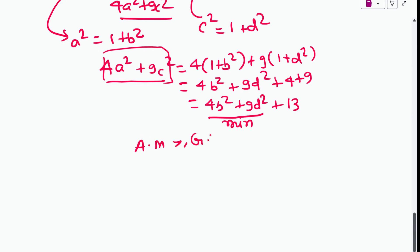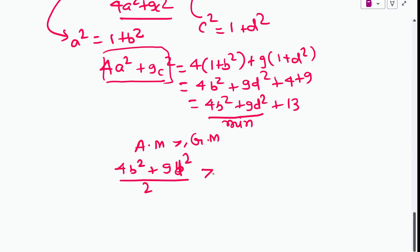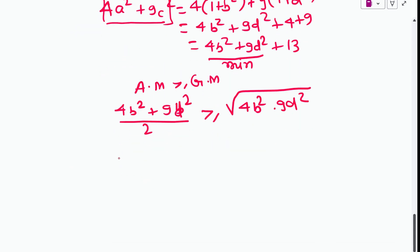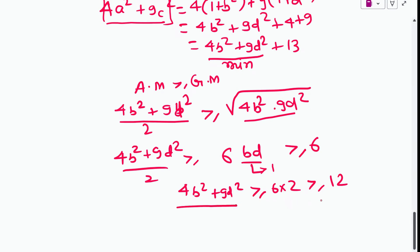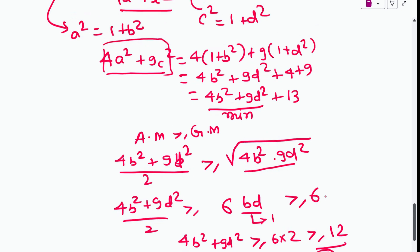We apply AM ≥ GM to the two terms 4b² and 9d²: (4b² + 9d²)/2 ≥ √(4b² · 9d²) = √(36b²d²) = 6·|bd|. Since bd = 1, this gives (4b² + 9d²)/2 ≥ 6, so 4b² + 9d² ≥ 12. The minimum value of 4b² + 9d² is 12.